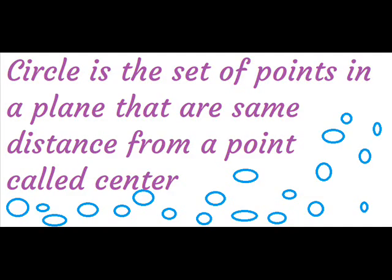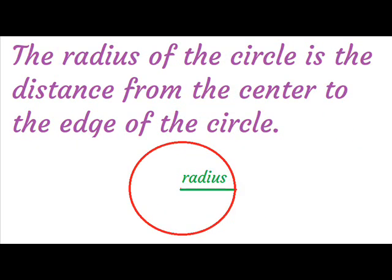A circle is the set of points in a plane that are the same distance from a point called the center. The radius of the circle is the distance from the center to the edge of the circle.